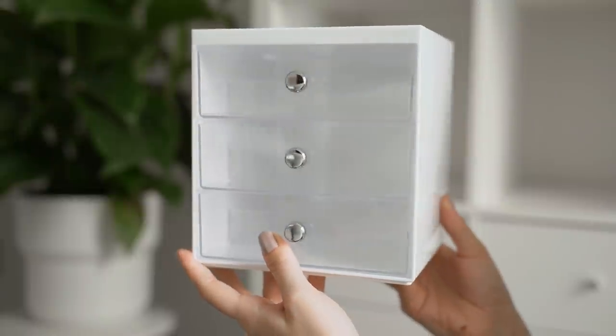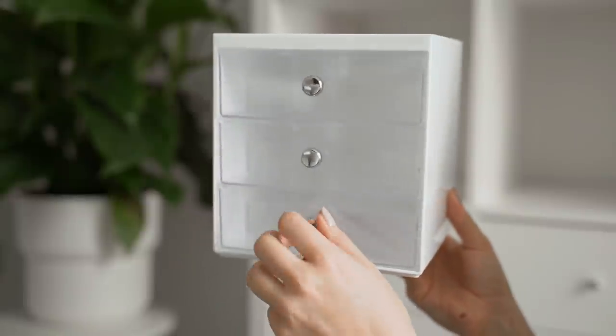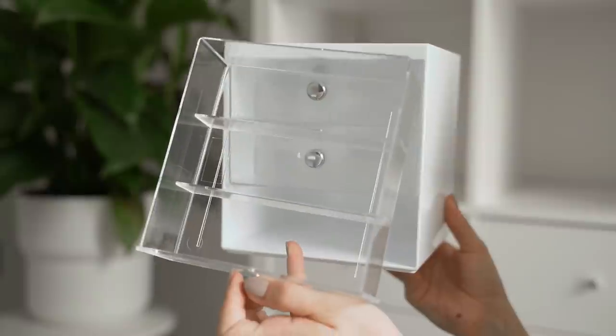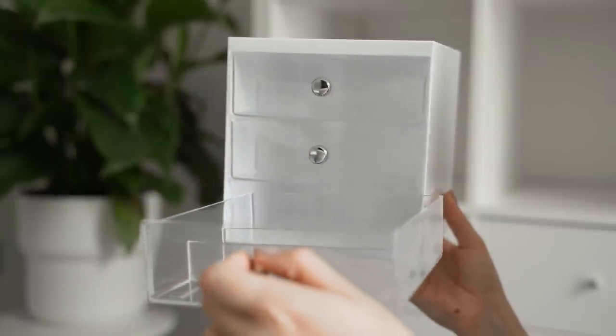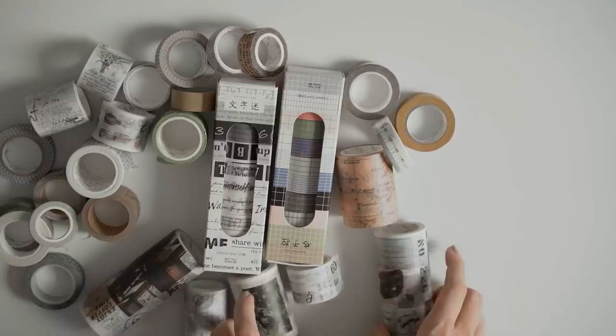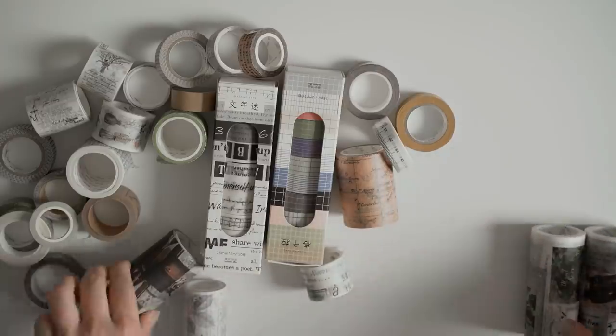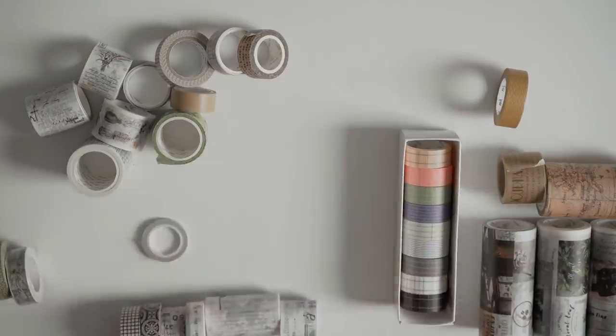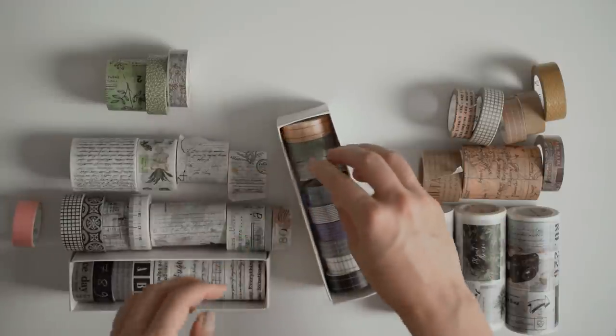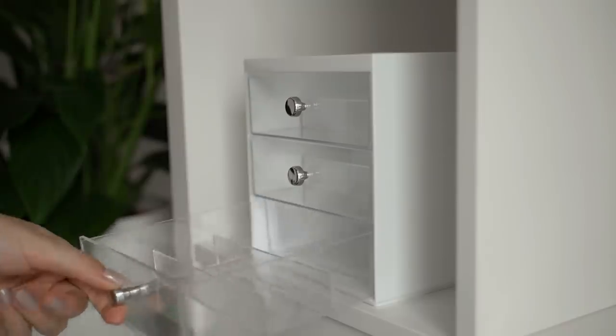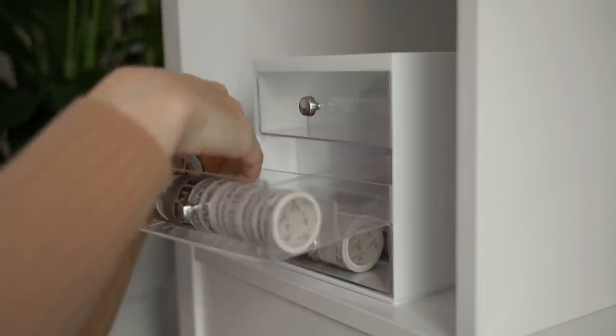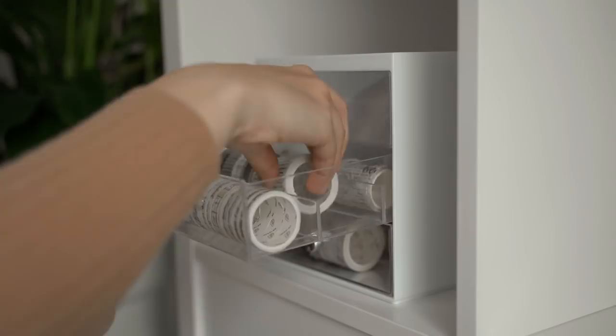To organize my washi tapes I found this acrylic unit on Amazon which is actually meant for organizing sunglasses, but the drawers have these compartments that are perfect for storing washi tape and they are also deep enough for them to stand next to each other vertically. My washi tape collection isn't too extensive at the moment and it's not fast growing at all, but if you do tend to collect any kind of stationery you should consider the extra space for expansion. I did try to organize them by color and style, although they're all pretty neutral anyways.